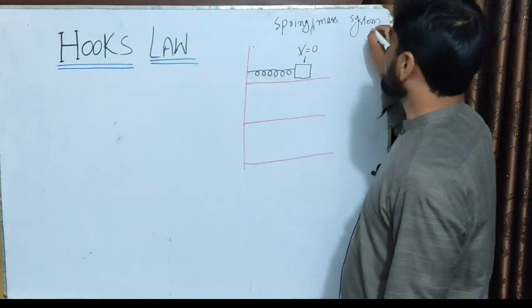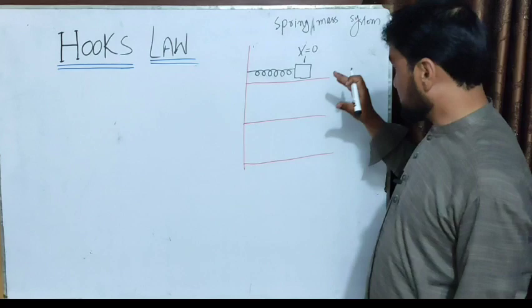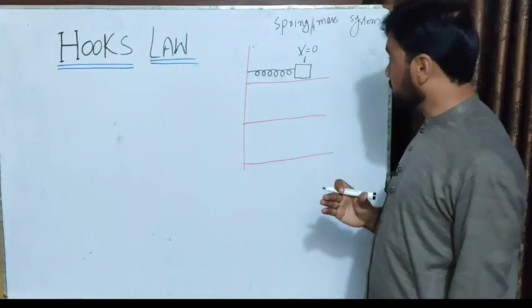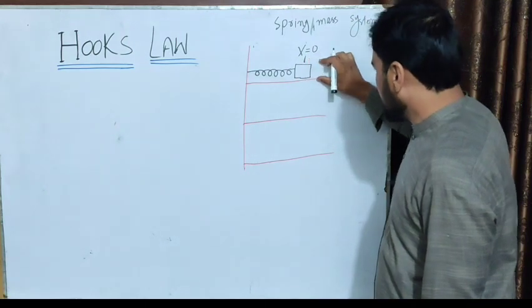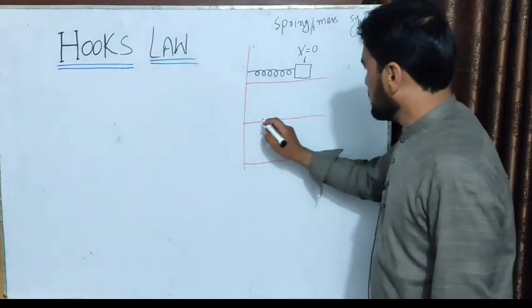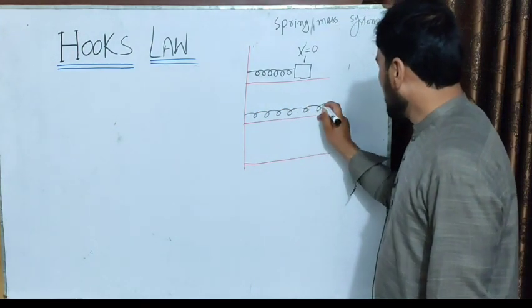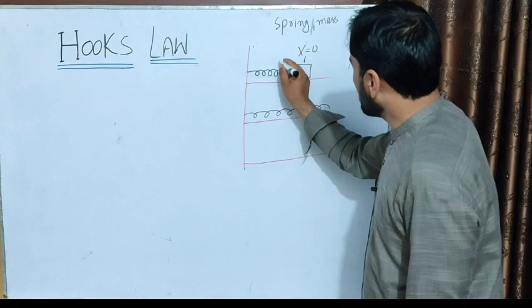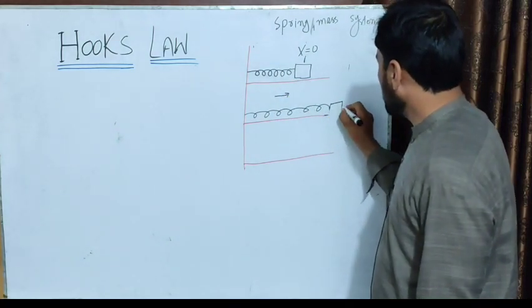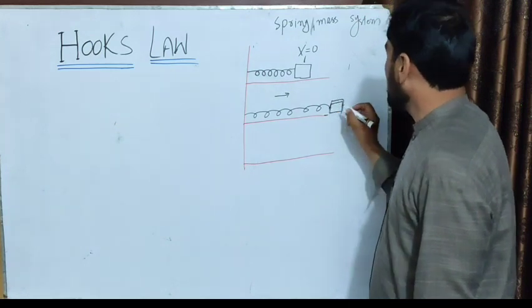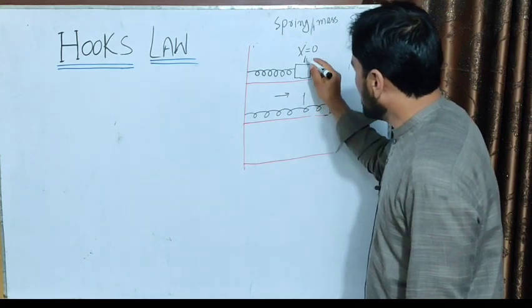In this spring mass system at equilibrium position, no force is applied - no external or deforming force. When we pull it, the object moves and the spring extends. This is the distance it travels.